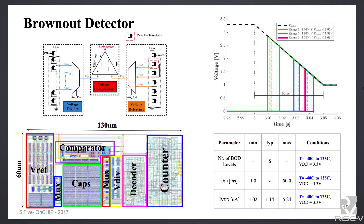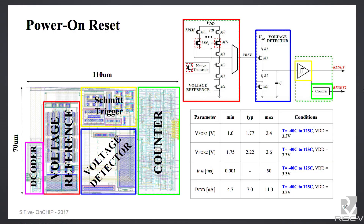We also have a brown-out detector. This brown-out detector has five different monitor levels so you can use it for different battery applications. All these levels are programmable and you can adjust when the battery is running out. This is also a low-power brown-out detector. We also have a power-on reset. The power-on reset is multilevel and has its own voltage reference, which operates in the order of nanoamps. We trigger events from the power-on reset based on counters and programmability.